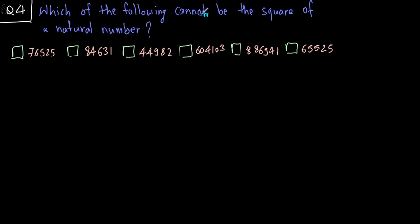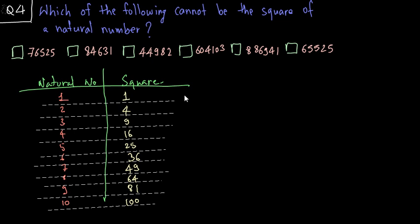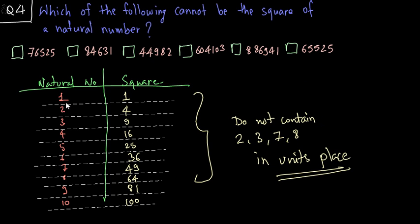Which of the following cannot be the square of a natural number? To solve this question, let me write a table on your screen. This table shows the list of natural numbers from 1 to 10 and their squares. If you observe carefully, these squares do not contain the numbers 2, 3, 7 and 8 in their units place. Same is the case with the next 10 natural numbers and the next 10 natural numbers and so on.